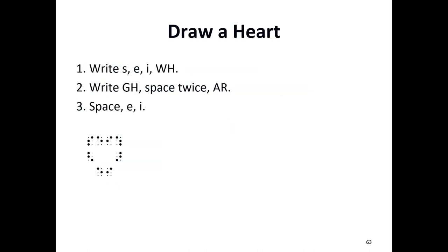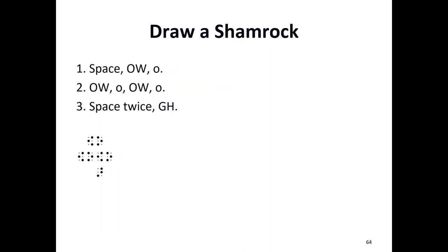Now let's have some fun. Now that we know some contractions, we can do drawing with our keyboard or braille writer. If you follow these steps, you should end up with a little heart shape in braille dots. You now know the contractions for WH, GH, and AR — anything capitalized in the steps is a contraction. Try it out and see if you can make a heart or two. You can also draw a shamrock — we just had the month of March and St. Patrick's Day. Capital letters indicate contractions, so OW and GH are contractions — go back and look those up and make a little shamrock.